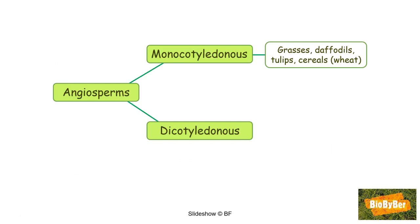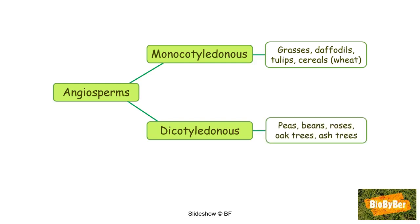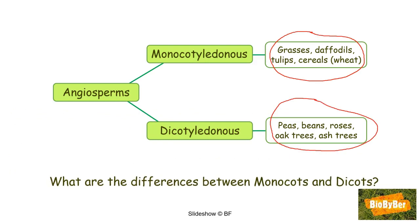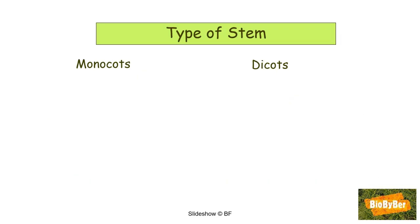Grasses, daffodils, tulips, and cereals like wheat and barley are all examples of monocot flowering plants, whereas peas, beans, roses, oak trees, and ash trees are all examples of dicot flowering plants. So why are grasses, daffodils, tulips, and cereals in one group, and what do peas, beans, roses, and ash trees all have in common? In other words, what are the differences between monocots and dicots?